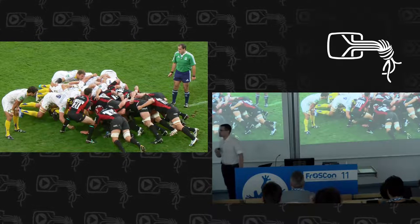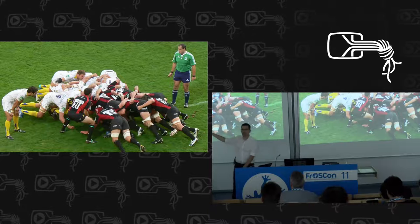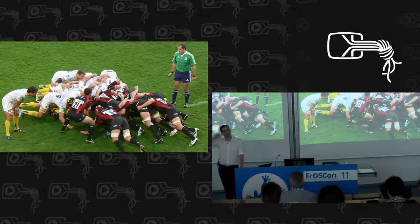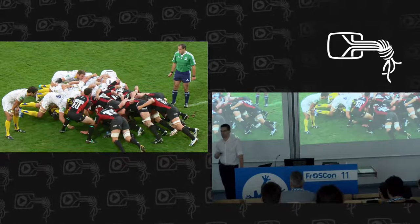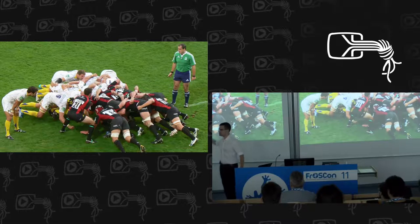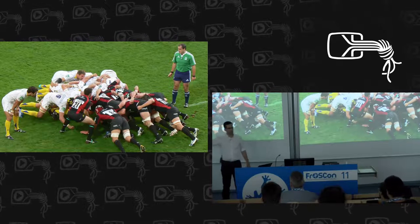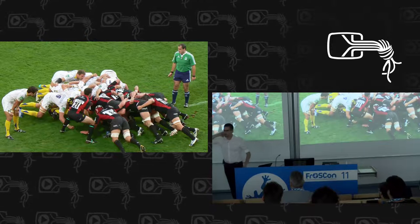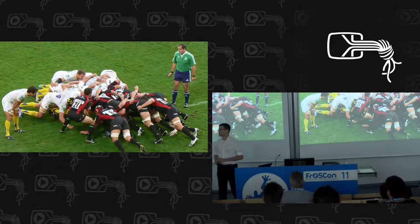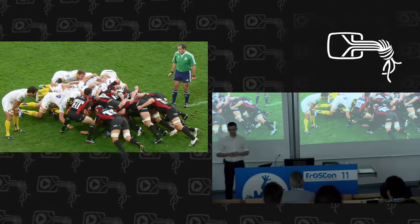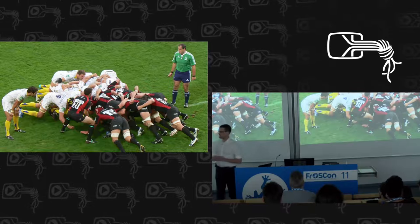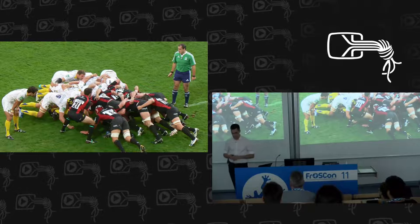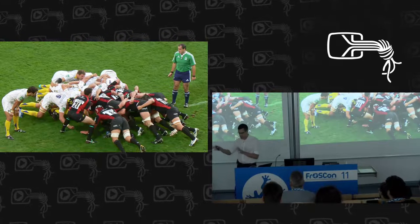I find it amusing that the inventors of Scrum named their defining daily occurrence — so defining it names the whole method — after an event in a reasonably violent contact sport that is so potentially dangerous that professional practitioners recognize a safe word, which they utter in the scrum when they fear their necks might be broken. I think it's really bizarre to use something like this as a metaphor for a daily team meeting.